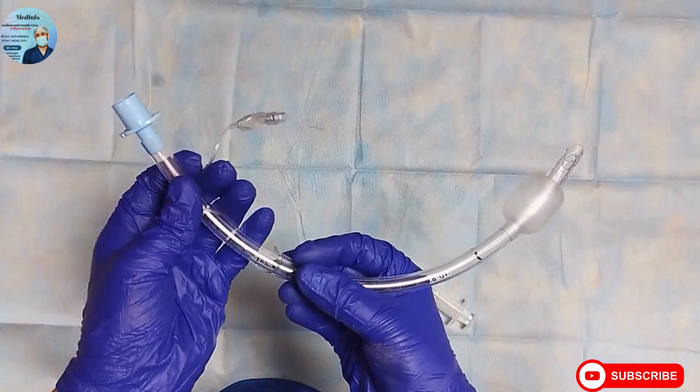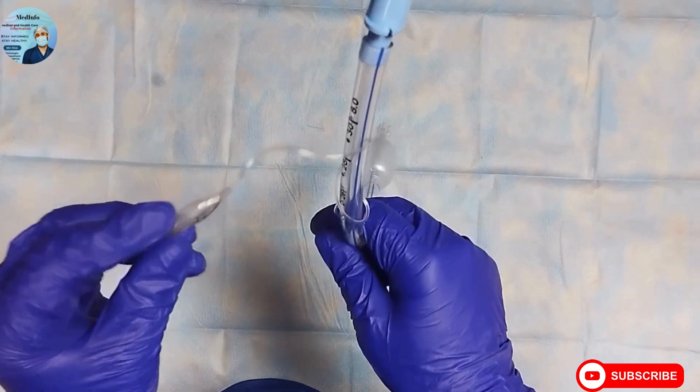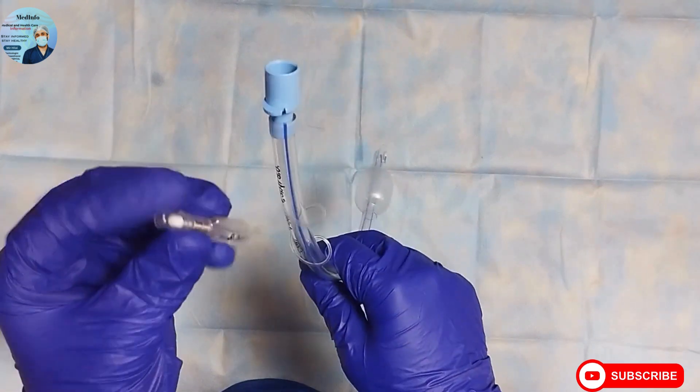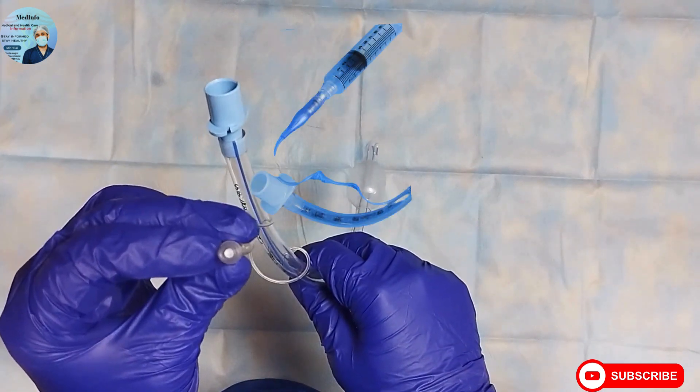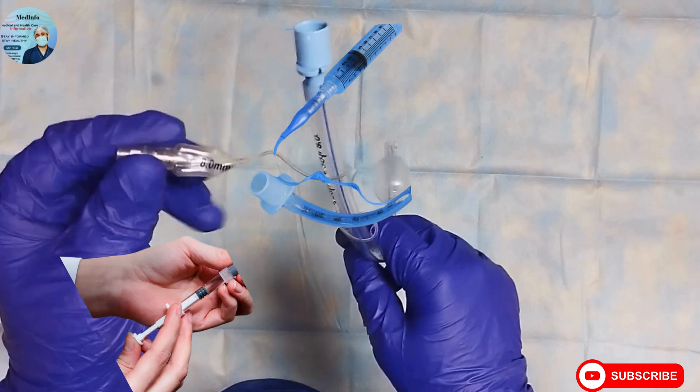To deflate the cuff during the extubation process, you just need to press the valve of this pilot balloon with an empty syringe and aspirate the air back.